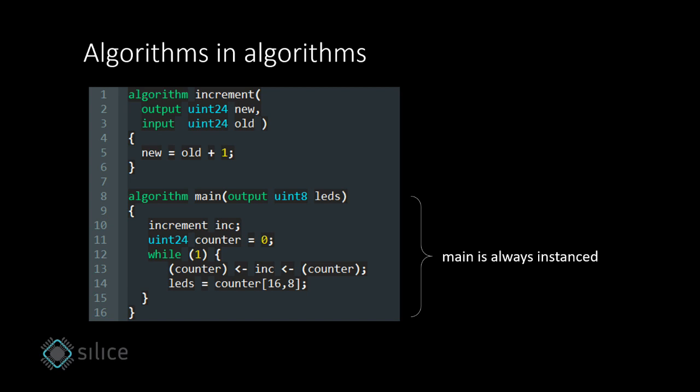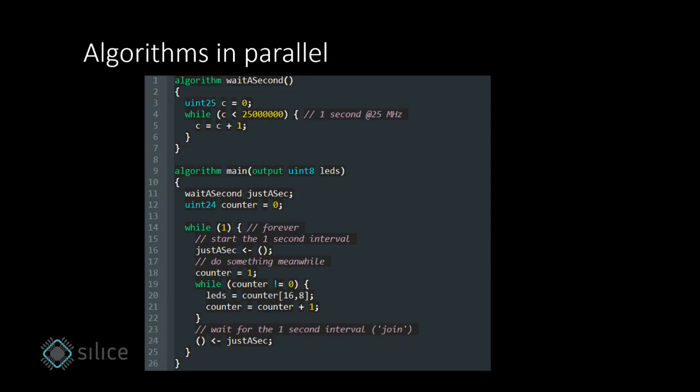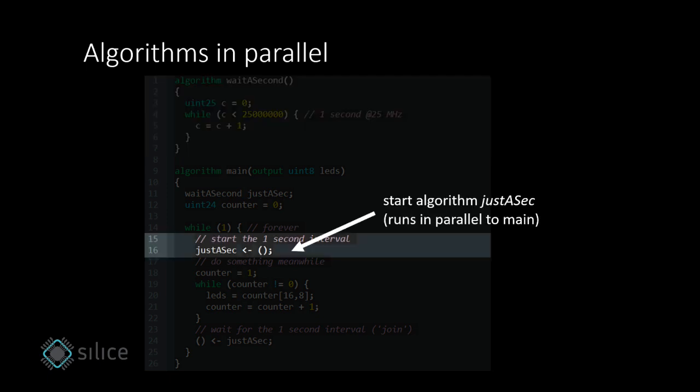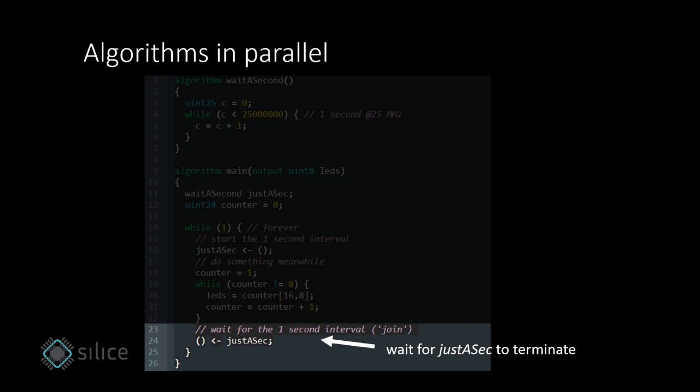So how do we run things in parallel? Well that's easy, here is an example. We define the wait-a-second algorithm, that waits for a second. Then we instance it in main and call it, but this time with a non-blocking call. Main just keeps going and does stuff. Let's assume this takes less than a second. When done, main joins with the wait-a-second algorithm. It simply waits until this other algorithm is done.